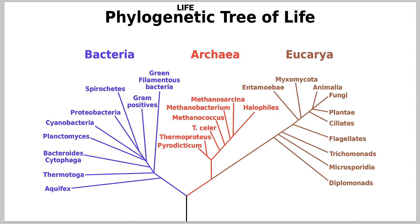Life as we know it — in the 1970s, someone started by dividing it into three categories, the most commonly known of which includes animals, fungi, plants, and such. But this was later changed.